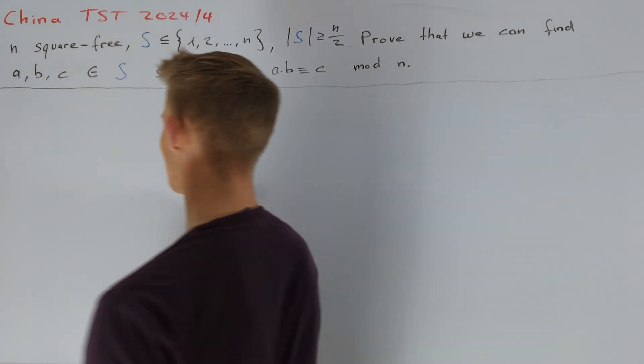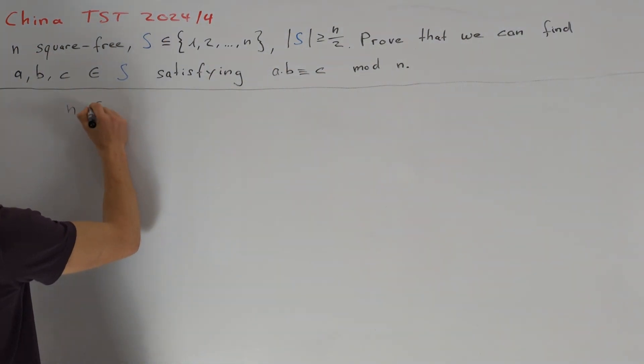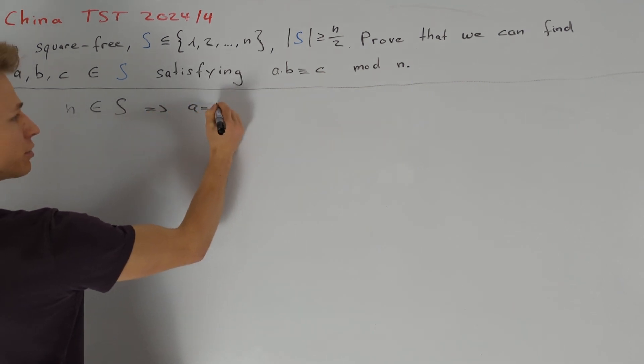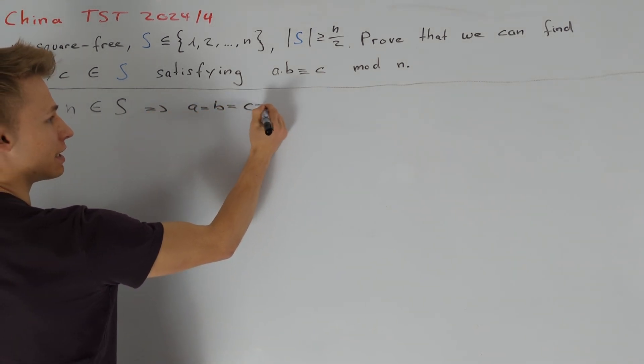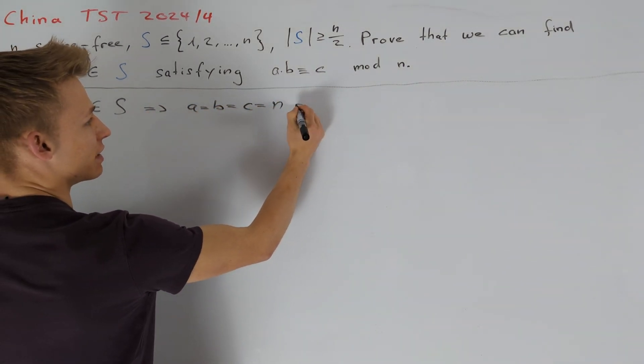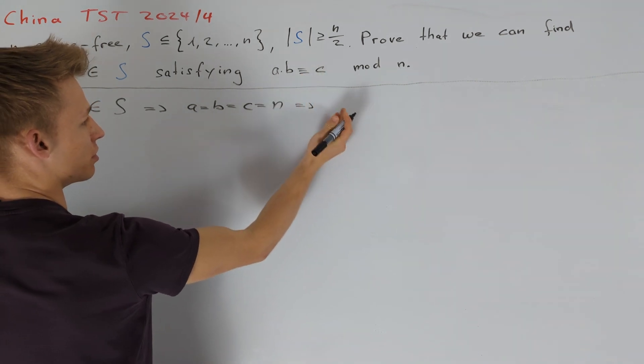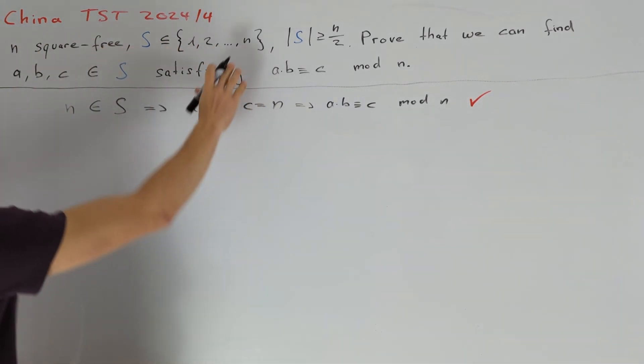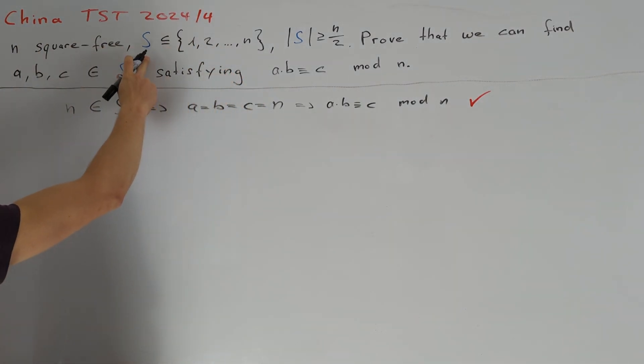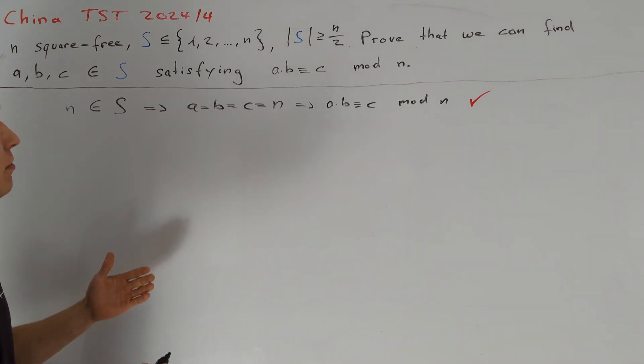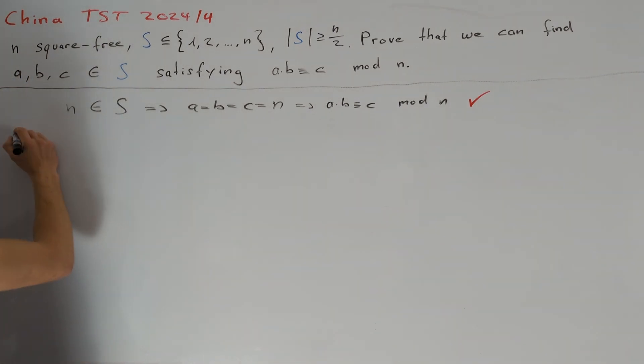First of all, I want to note that if n is an element of S, then we can just choose a to be equal to b equal c equal n to get this equation here is true. So from now on, we can assume that n is not an element of S. To get a first intuition for the problem, we want to consider the case that n is equal to p, a prime number.